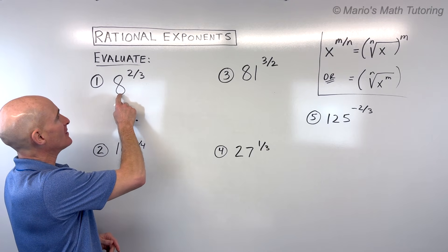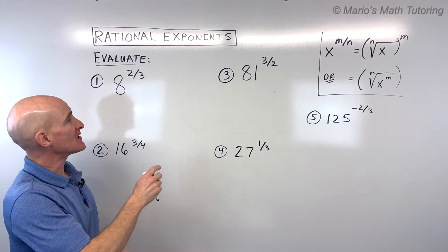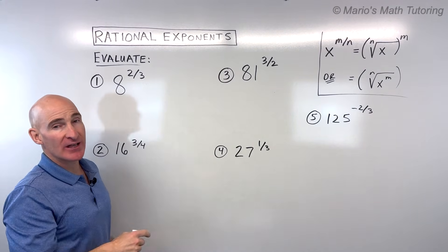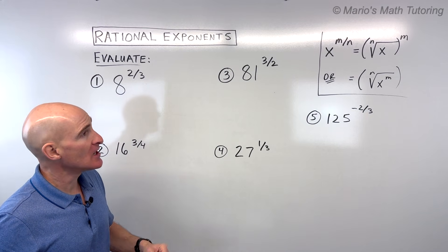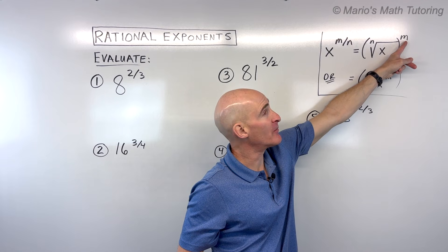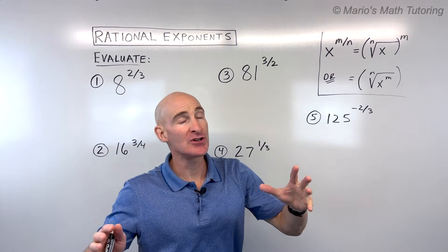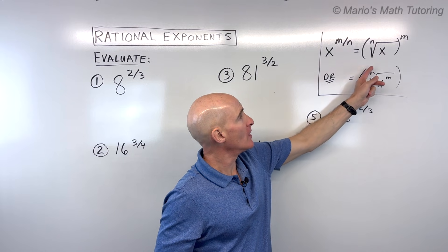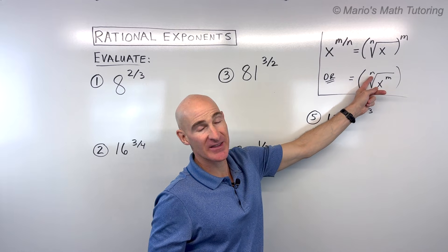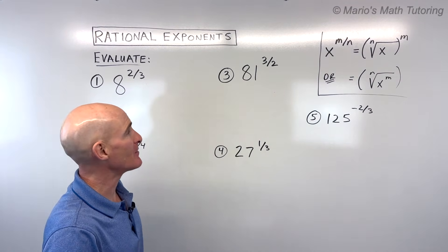So if we have 8 raised to the two-thirds power, what you want to remember is that the numerator is the power and the denominator is the root or the index. You can look at this formula — you can either raise it to the mth power and take the nth root, but the order is up to you. Whether you take the nth root first and then raise it to the mth power, or raise it to the mth power first and then take the nth root, either way you'll get the same answer.